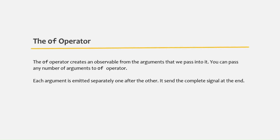In this lecture, we are going to learn about the `of` and `from` operators of RxJS and what is their use. The `of` operator creates an observable from the arguments that we pass into it. You can pass any number of arguments, and each argument will be emitted separately one after the other. Once all the arguments have been emitted, the `of` operator also sends the complete signal at the end.